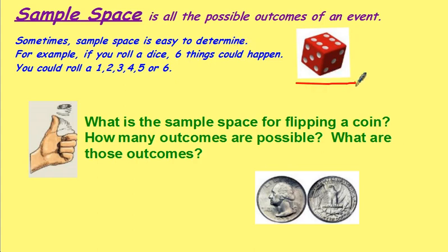the things that could happen are 1, 2, 3, 4, 5, or 6. Six things could happen.